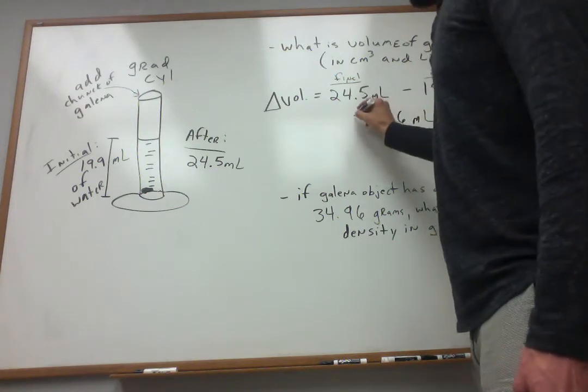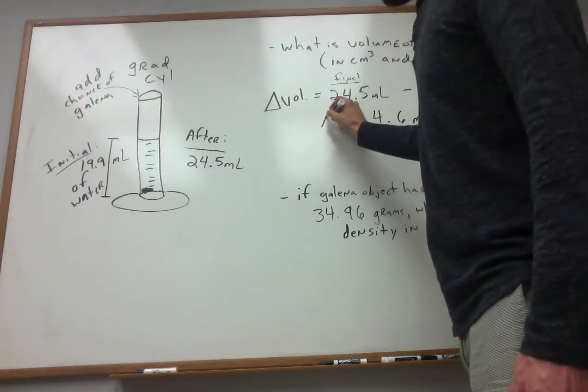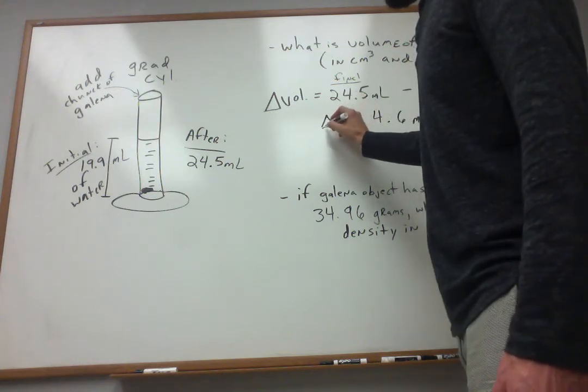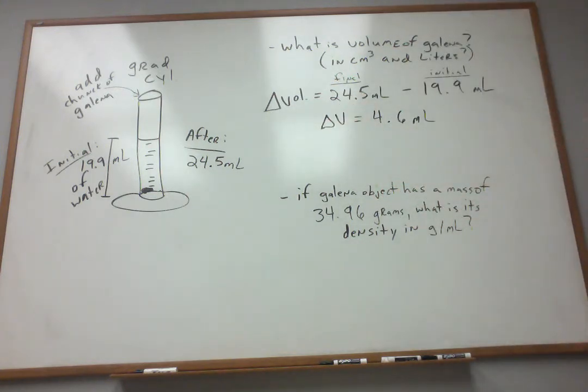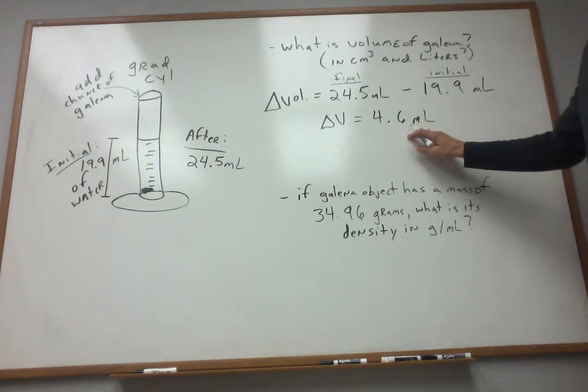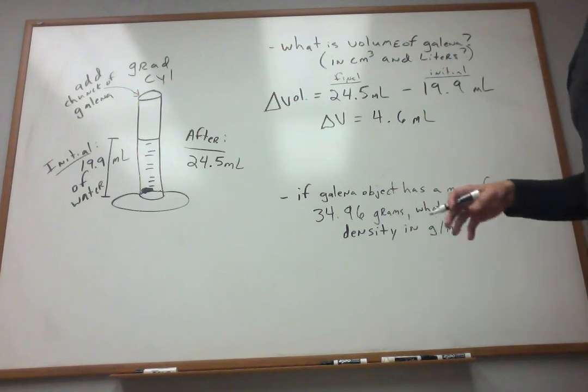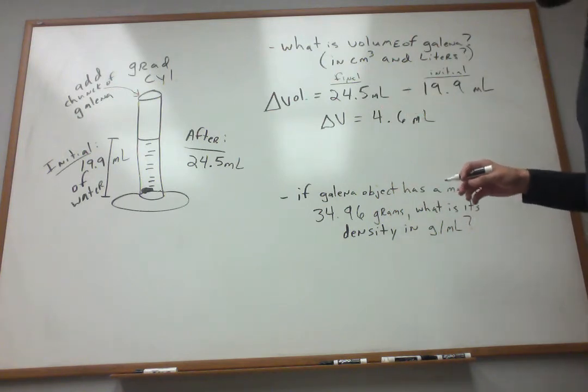And we quickly come to the conclusion that we've got 4.6 milliliters difference. Now that 4.6 milliliters must correspond to the volume of this chunk of galena that we added into our system. So we know the volume in milliliters.